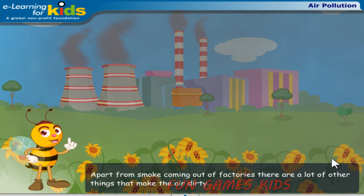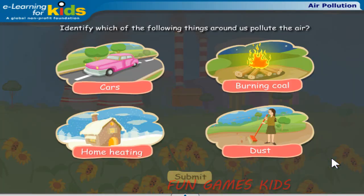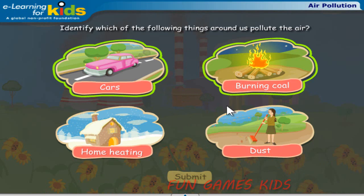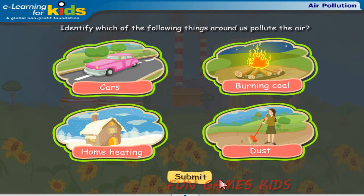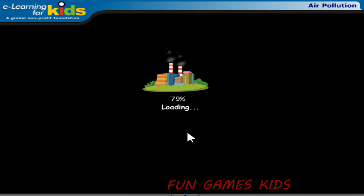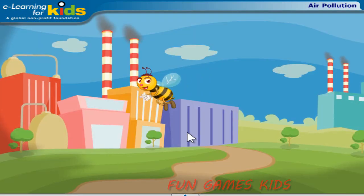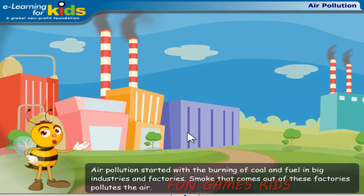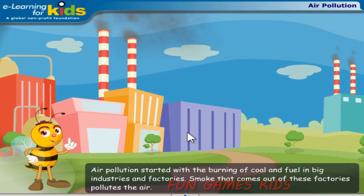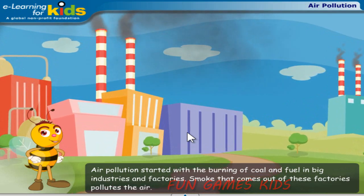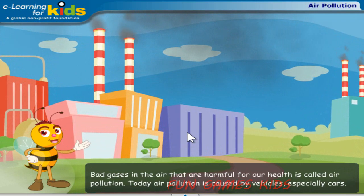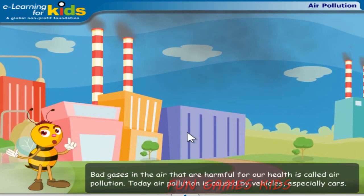Apart from smoke coming out of factories, there are a lot of other things that make the air dirty. Identify which of the following things around us pollute the air. Air pollution started with the burning of coal and fuel in big industries and factories. Smoke that comes out of these factories pollutes the air.